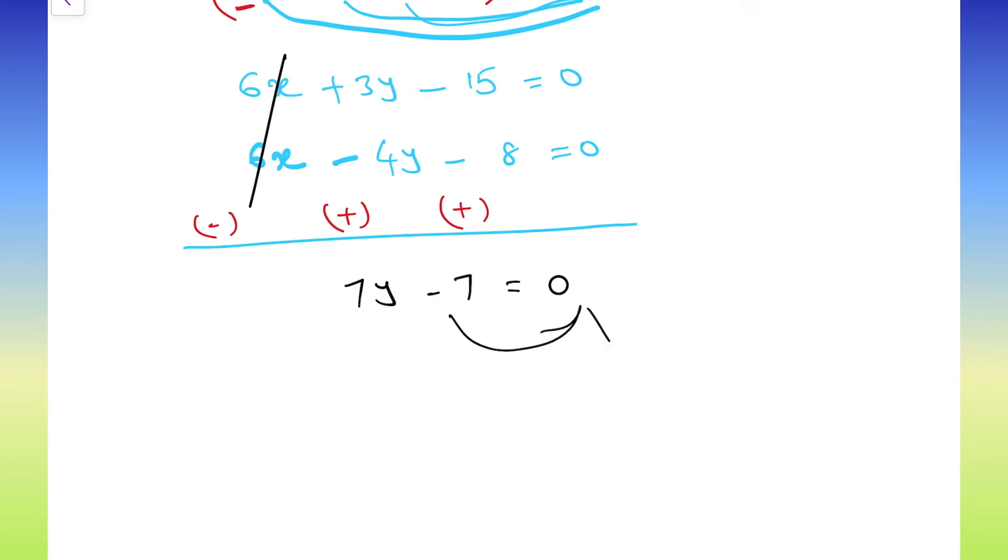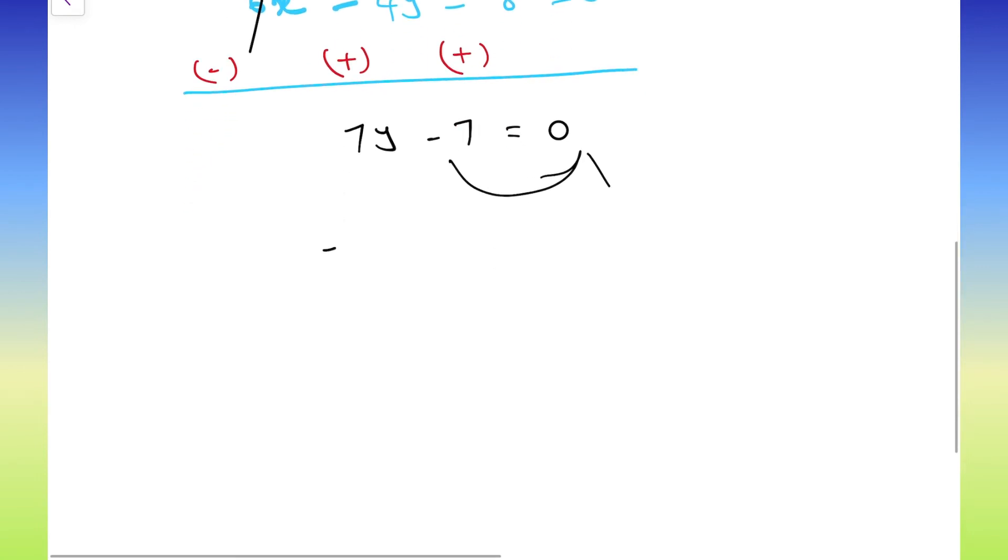Now, take this minus 7 to the right side. Then, we will get 7y equals to 7. Take 7 also to the right side. y equals to 7 by 7. 7, 7 cancel. Then, the value of y is 1.